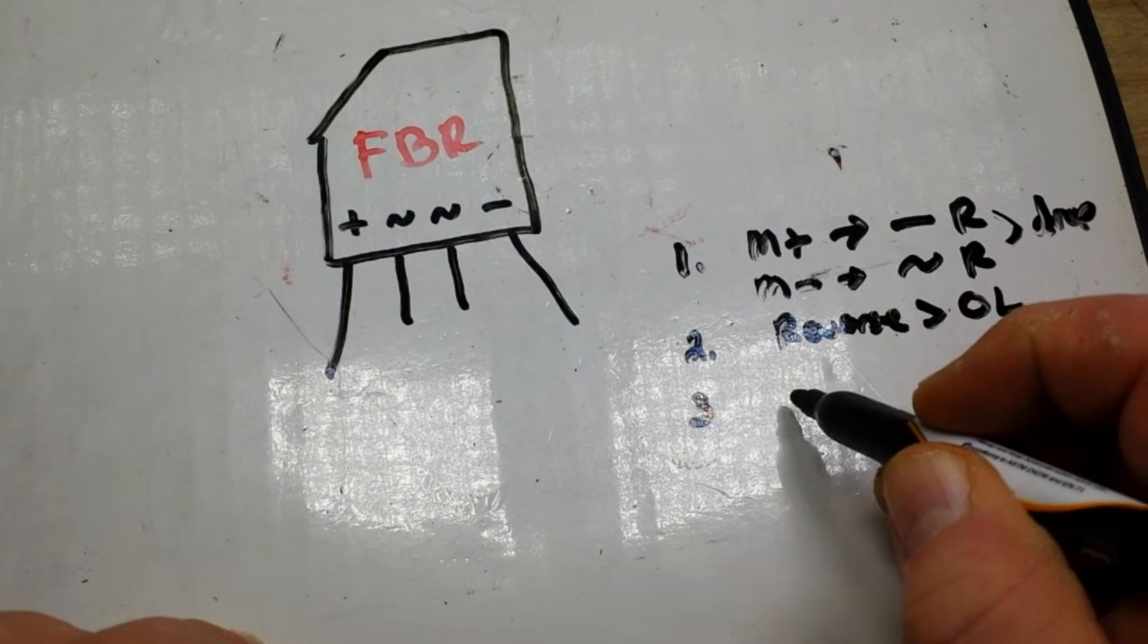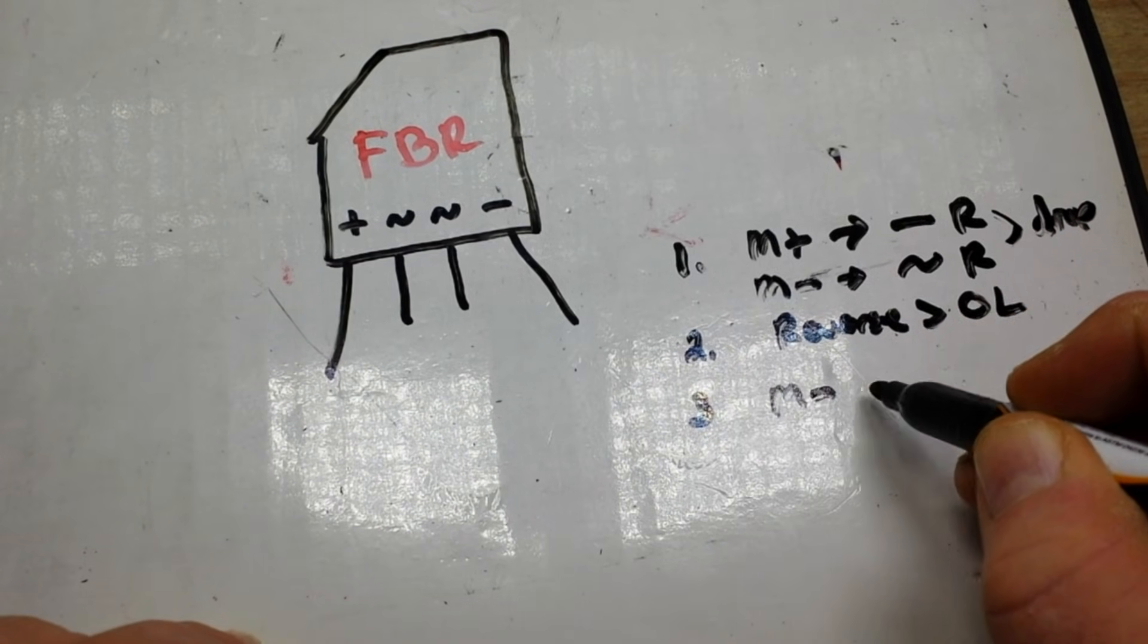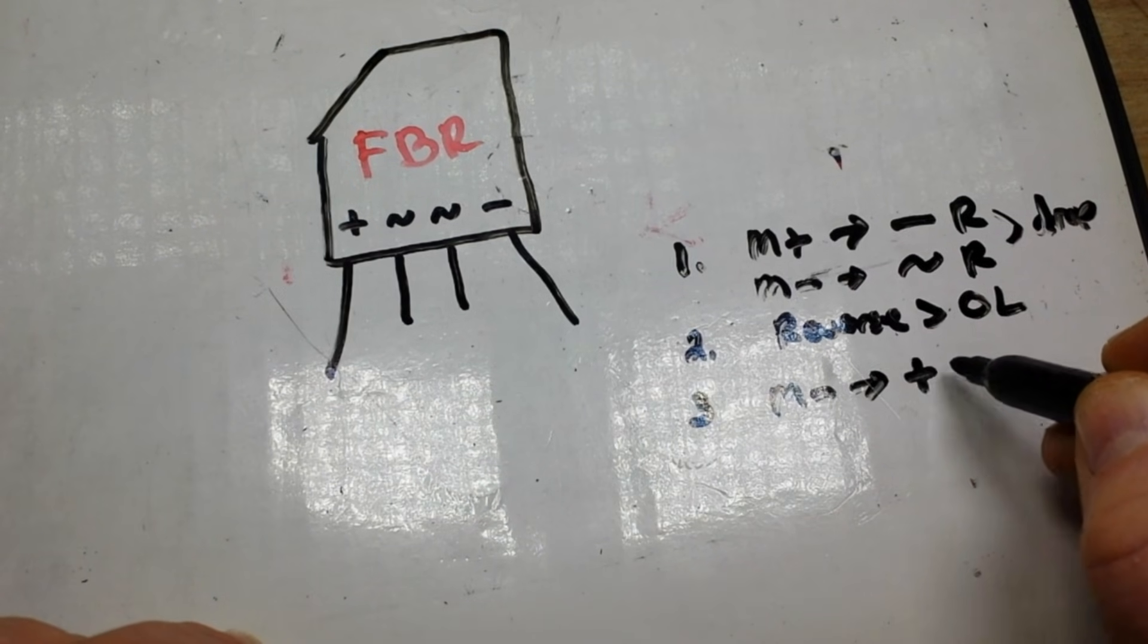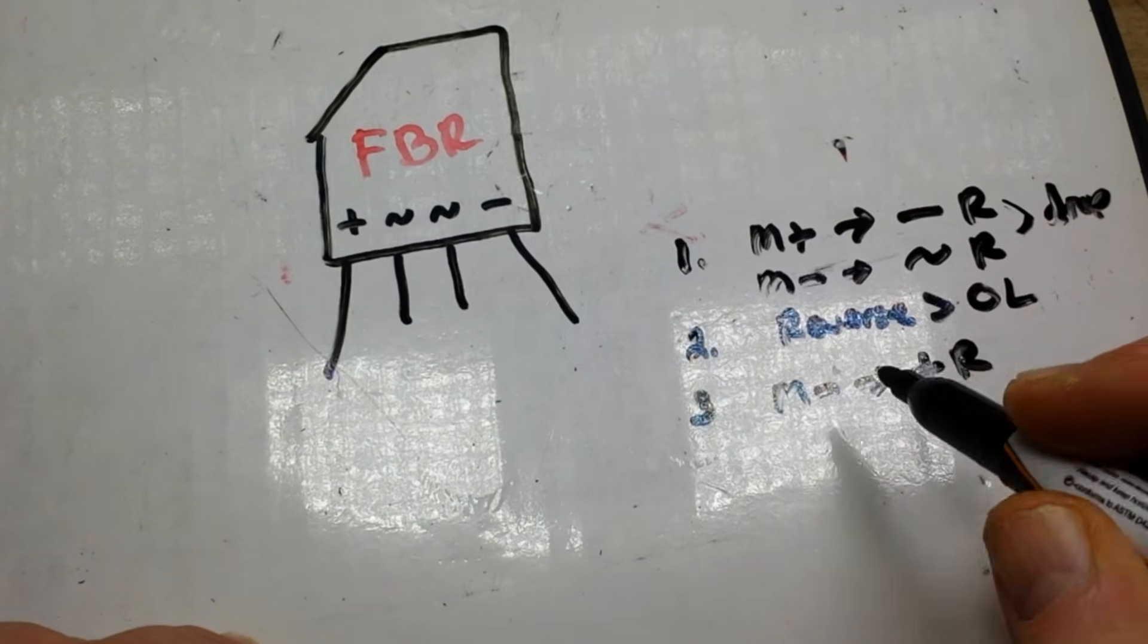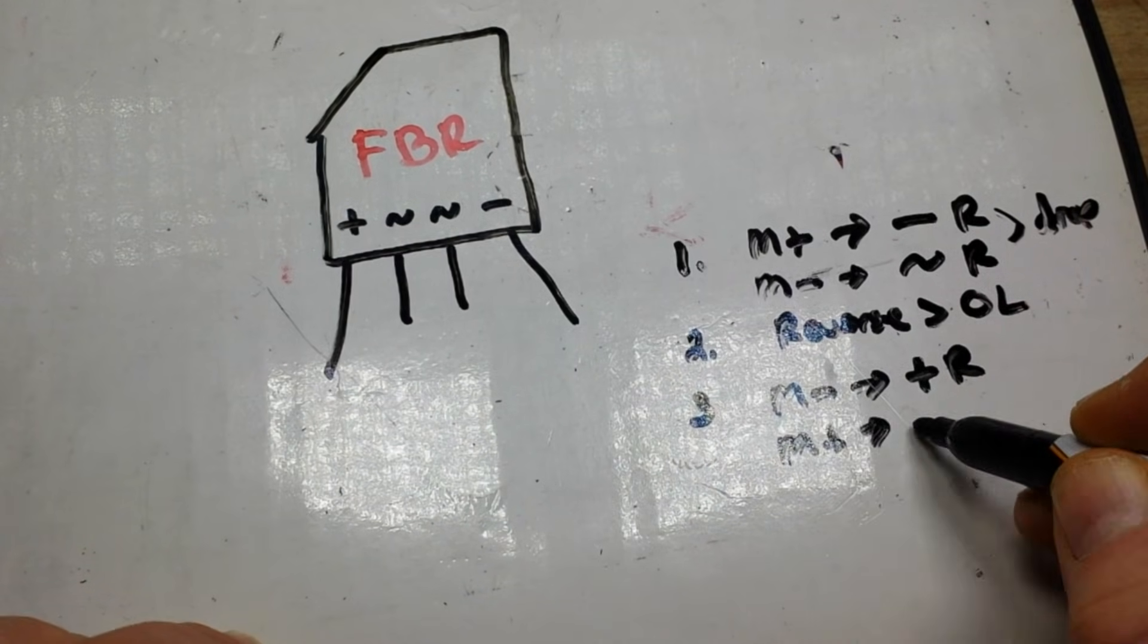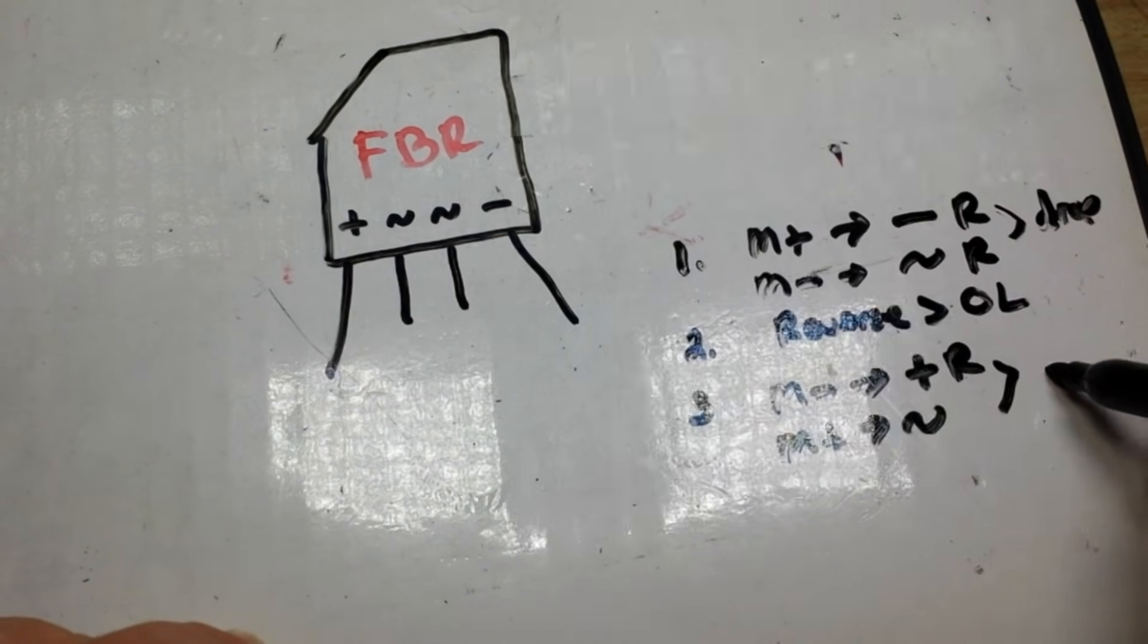And step three is you put your meter negative on the positive for the rectifier and your meter positive on the AC, and you should get a drop.